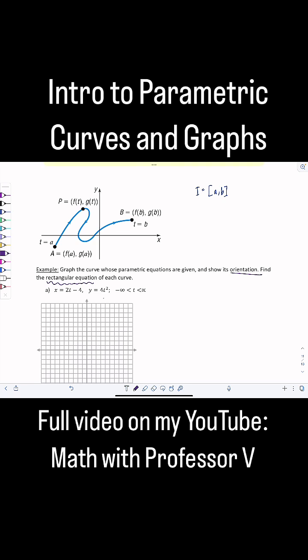No t's, no parameters. So let's see here, we have x equals 2t minus 4 and y equals 4t squared.